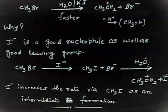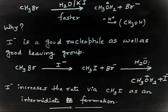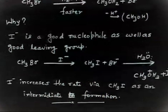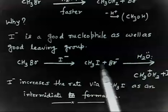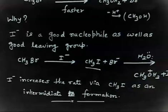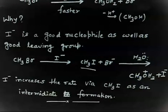So what is the function of I-? I- is basically acting as a catalyst. In the first part of the reaction it combines with the alkyl halide, and in the second part it leaves as I-. So I- is acting as a good nucleophile as well as a good leaving group. I- increases the rate via formation of CH3I as an intermediate. This intermediate is then attacked by H2O in the next step. So I- increases the rate through intermediate formation.